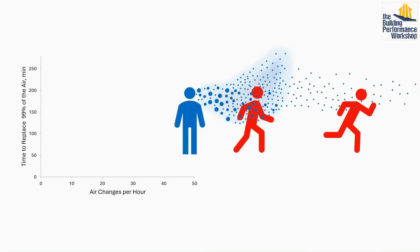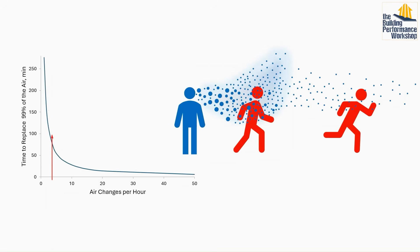In terms of airborne disease transmission, what really matters is the time it takes for a significant proportion of the air to be physically replaced by fresh air. The relationship between ACH and the time taken to replace 99% of the air is not linear. For example, an ACH of 1 takes 276 minutes to replace 99% of the air. Increasing to ACH 4 drops that to 69 minutes — a dramatic reduction. Going from ACH 4 to 10 drops it further to 28 minutes. After a certain point, however, the payoff from increasing ACH is less significant.